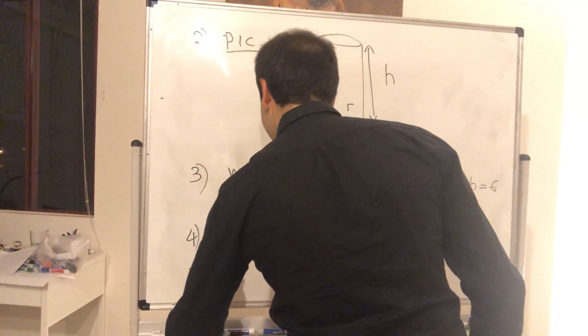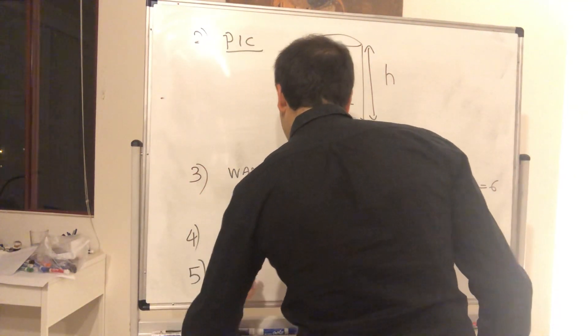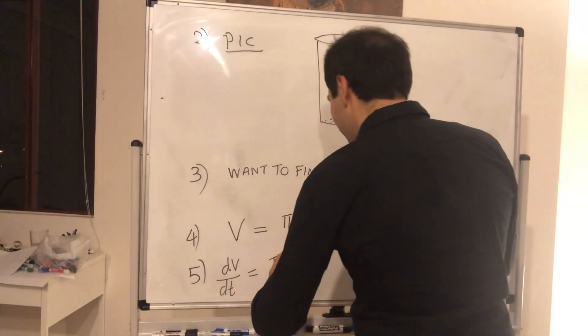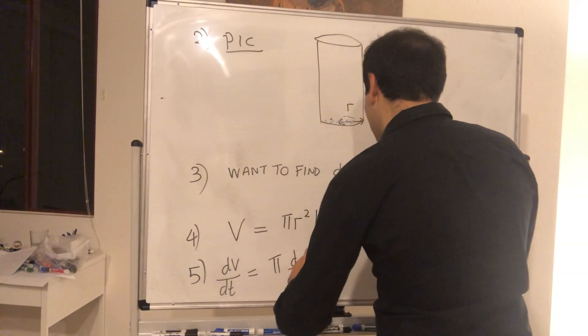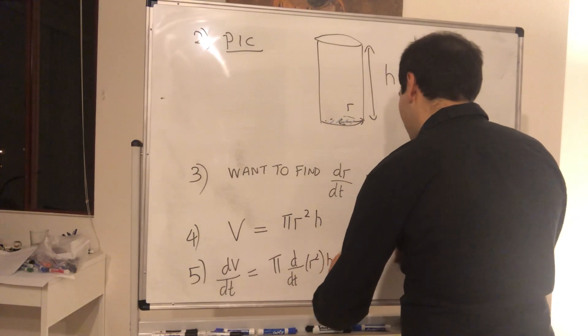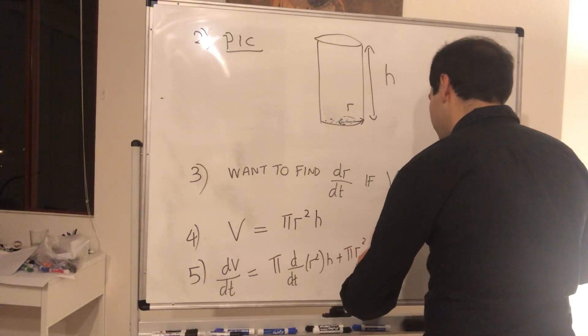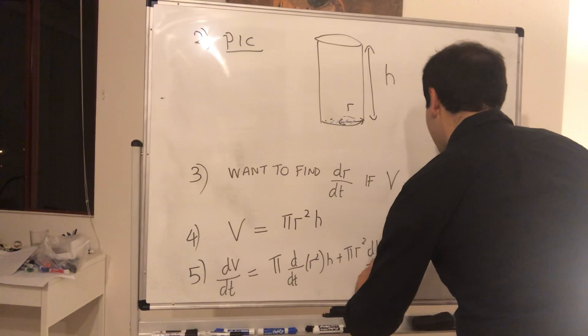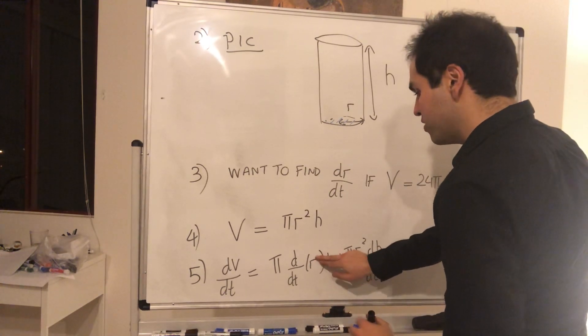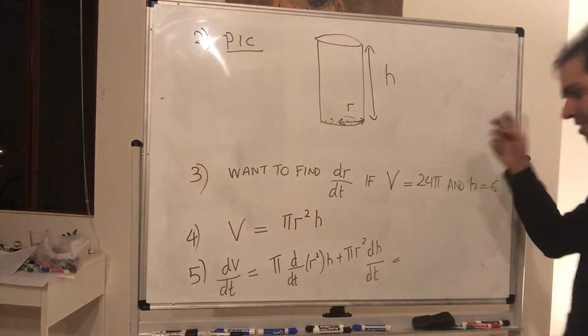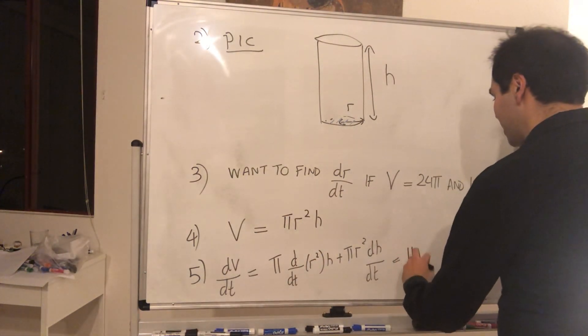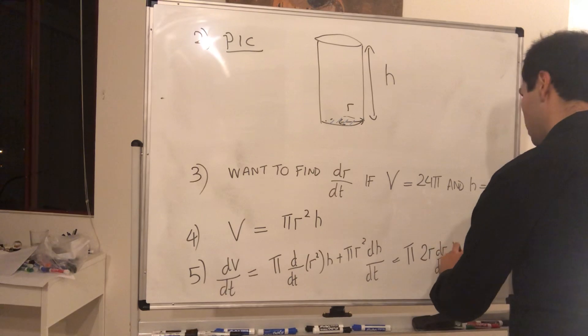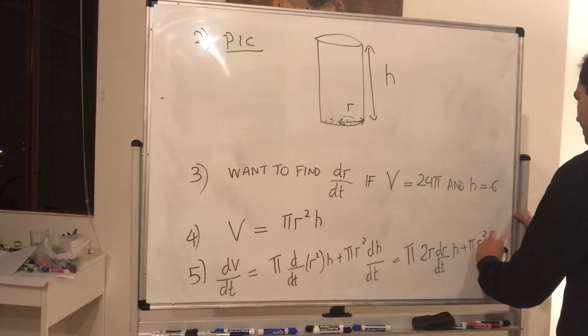In particular, let's differentiate that, so dV/dt becomes, now this is a product of two functions, so we have to use the product rule. So π times d/dt of r² times h, plus πr² dh/dt. And for this, now, because it's the composition of two functions, we have to use the chain rule, to get π times 2r dr/dt h, plus again, πr² dh/dt.